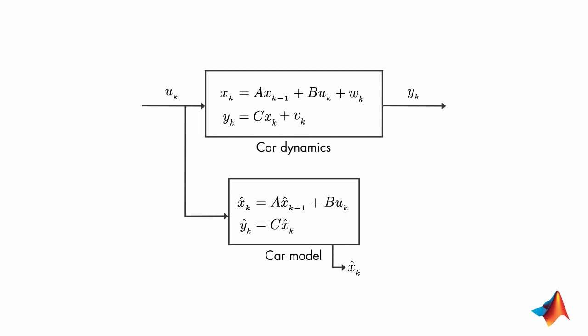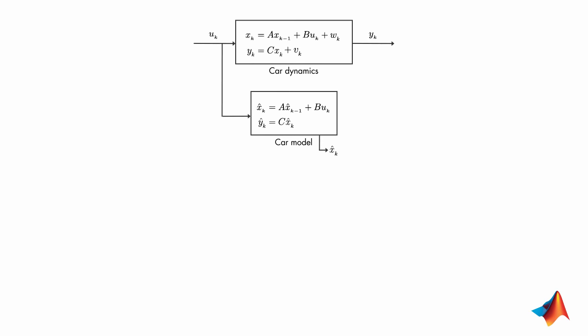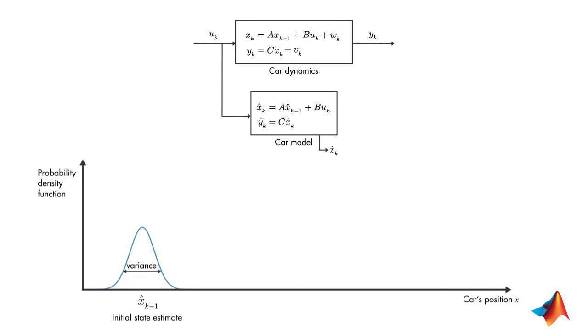We'll discuss the working principle of the Kalman filter visually with the help of probability density functions. At the initial time step k-1, the actual car position can be anywhere around the estimate x hat k-1, and this uncertainty is described by this probability density function. What this plot also tells us is that the car is going to be most likely around the mean of this distribution.